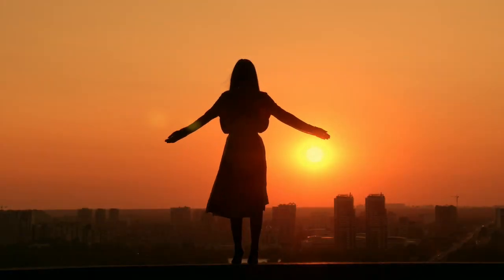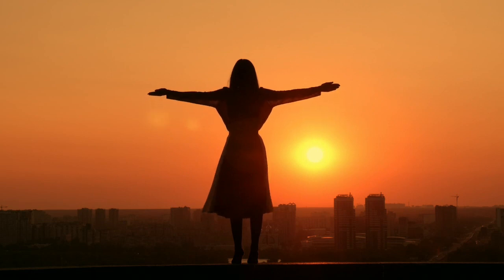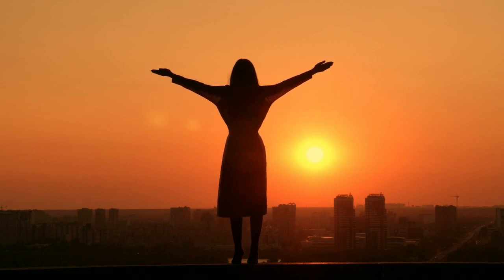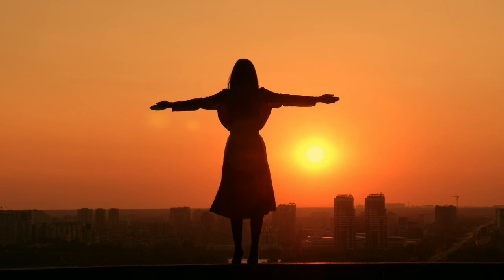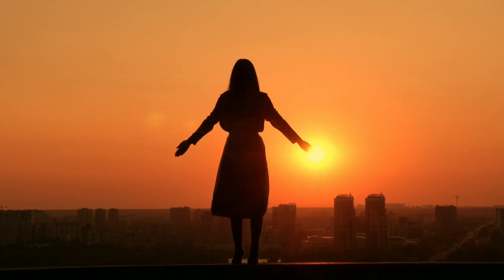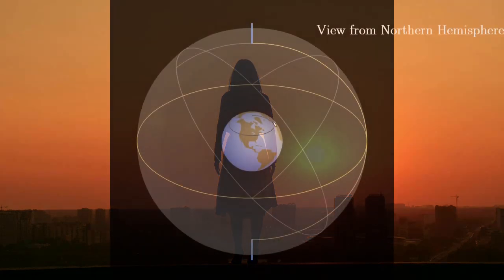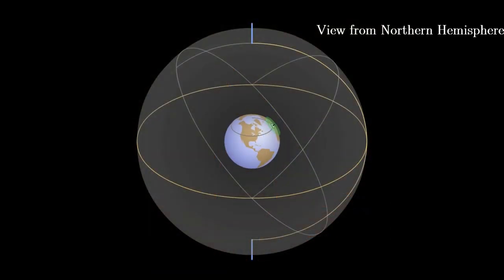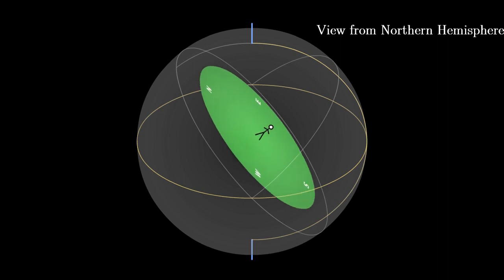Now, imagine a woman standing somewhere on the earth looking up at the skies. We will try to see things from her perspective in what is called the local horizon view. I will now shift between the celestial sphere view and the horizon view from various latitudes.